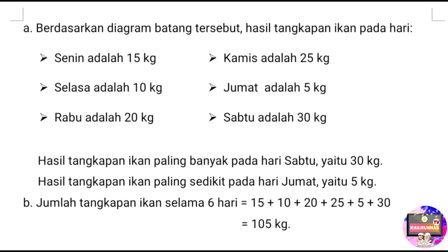Berdasarkan diagram batang tersebut, hasil tangkapan ikan pada hari Senin adalah 15 kg, Selasa adalah 10 kg, Rabu adalah 20 kg, Kamis adalah 25 kg, Jumat adalah 5 kg, dan Sabtu adalah 30 kg. Hasil tangkapan ikan paling sedikit adalah pada hari Jumat, yaitu 5 kg.